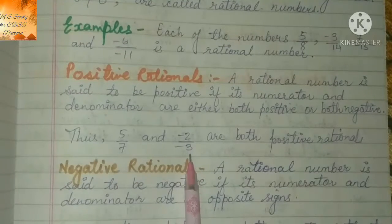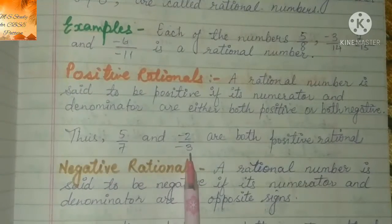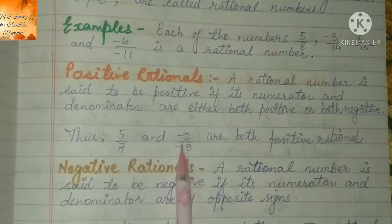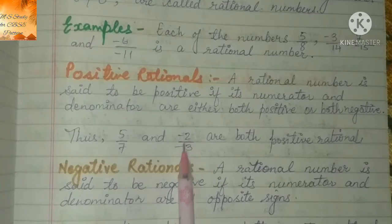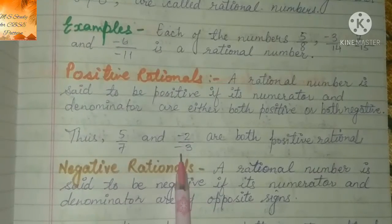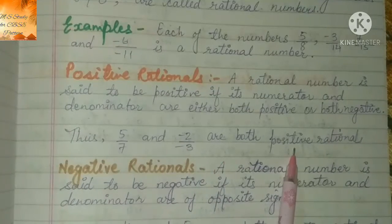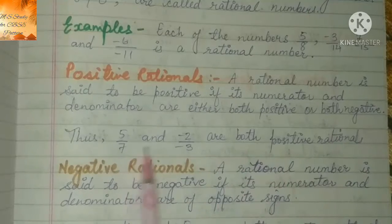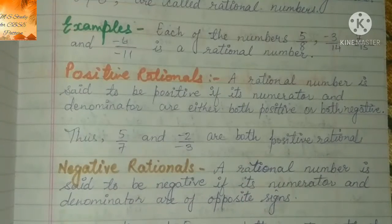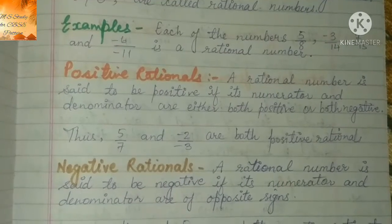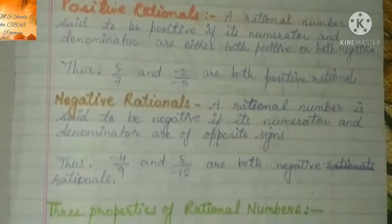minus 2 by minus 3 — तो minus से minus cancel out हो जाएगा. दोनों ही same sign के हैं, तो यह rational number भी positive rational number है. ठीक है?